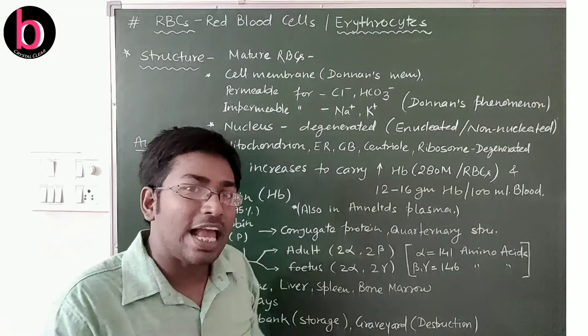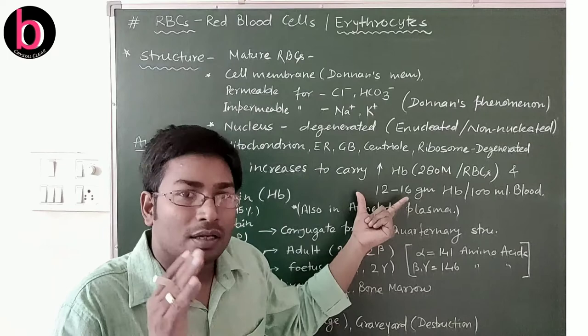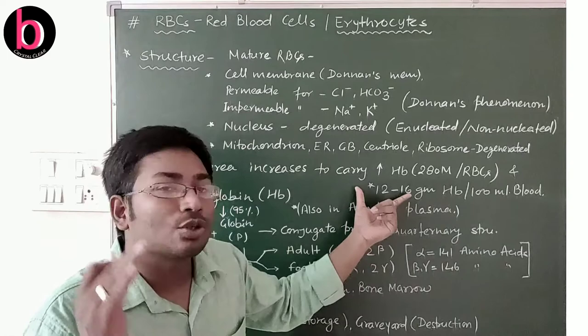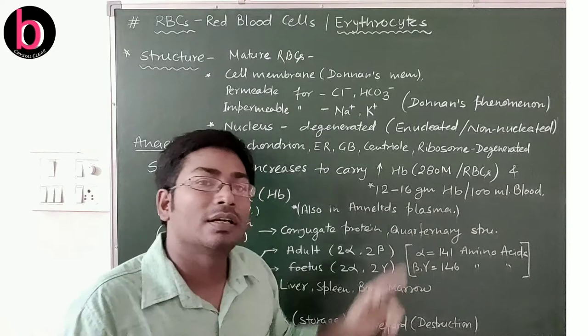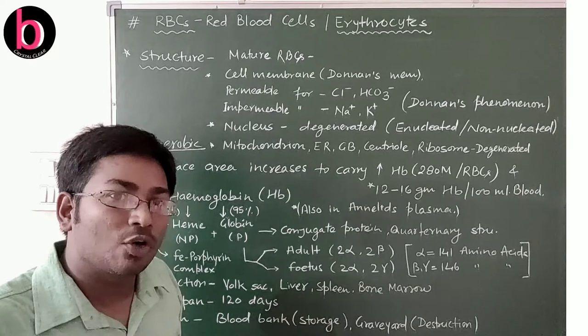In a single RBC there are 280 million hemoglobin molecules. In 100 ml of blood, there is 12 to 16 grams of hemoglobin. A deficiency below this level causes an anemic condition — anemia being defined as a lack of hemoglobin or, indirectly, a lack of red blood cells.